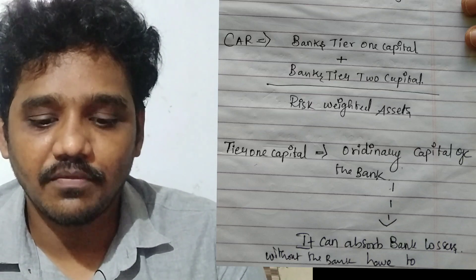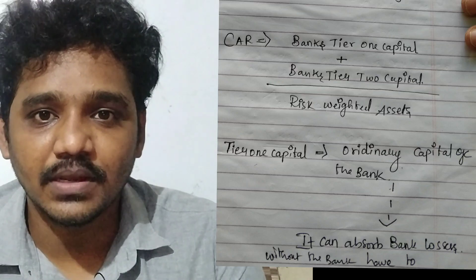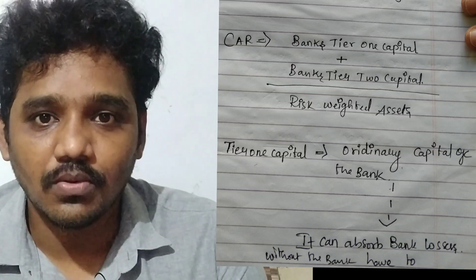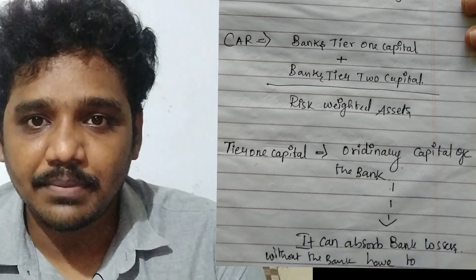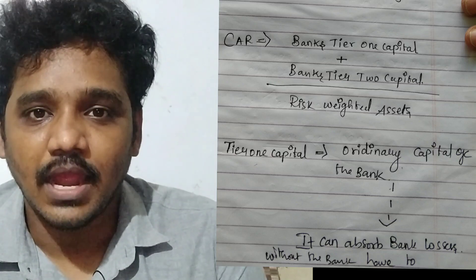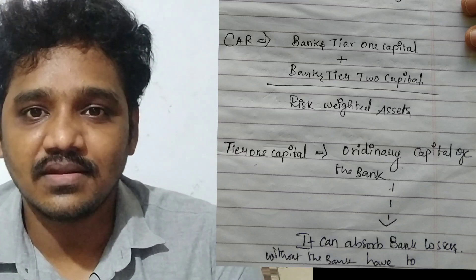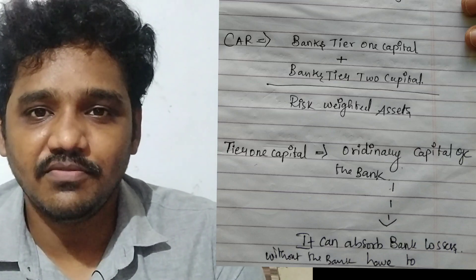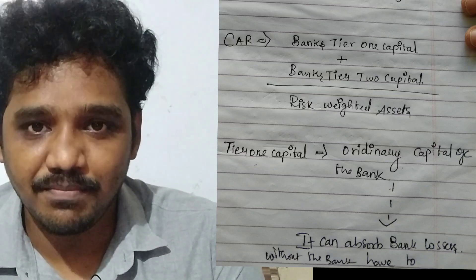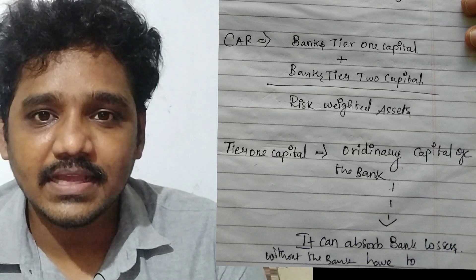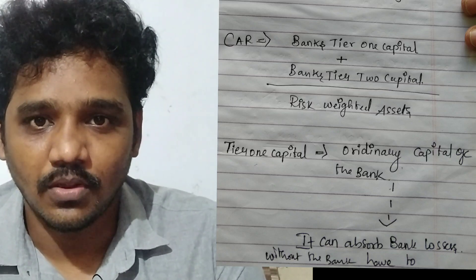If a customer wants to understand a bank's financial performance, they have to see both Tier 1 and Tier 2 capital. Capital Adequacy Ratio is Tier 1 capital plus Tier 2 capital divided by risk-weighted assets. Risk-weighted assets are the total assets of the bank, categorized based on the risk attributable to each category of assets.